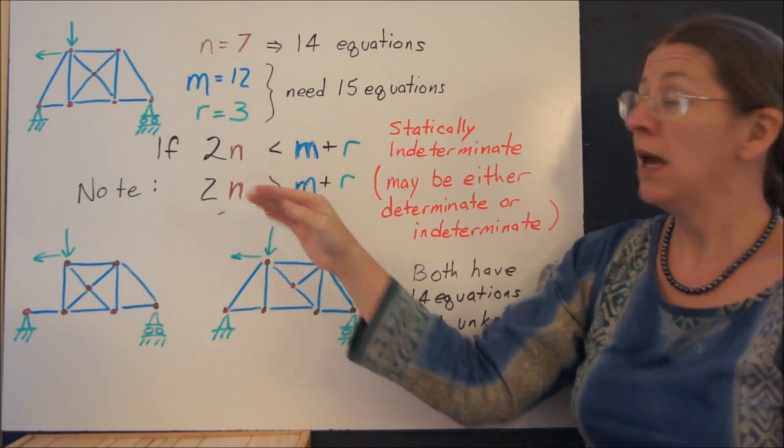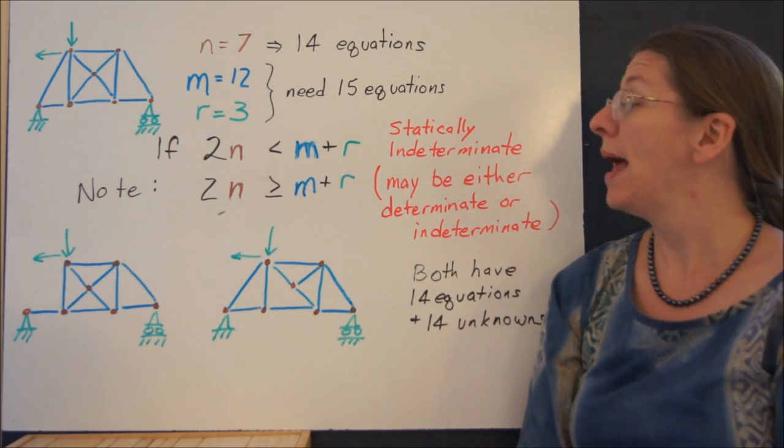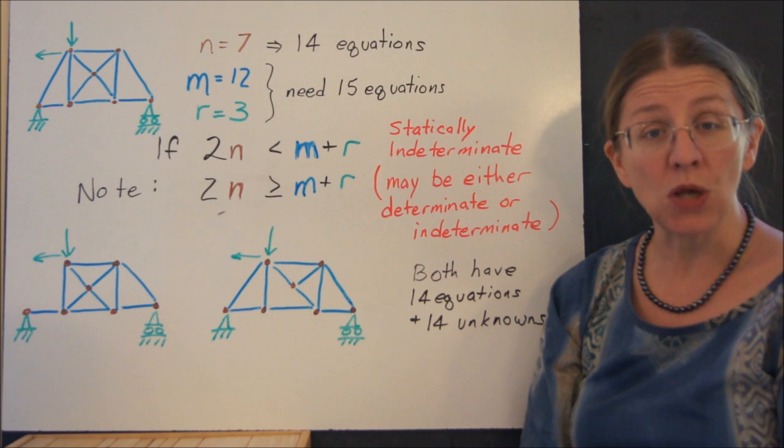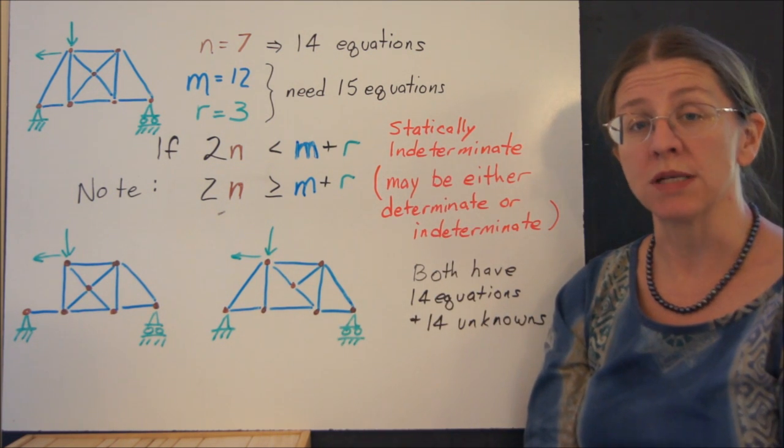I'm never going to be able to solve this. And if you look at this as an equation, if 2n is less than m plus r, then you know this is a statically indeterminate truss.